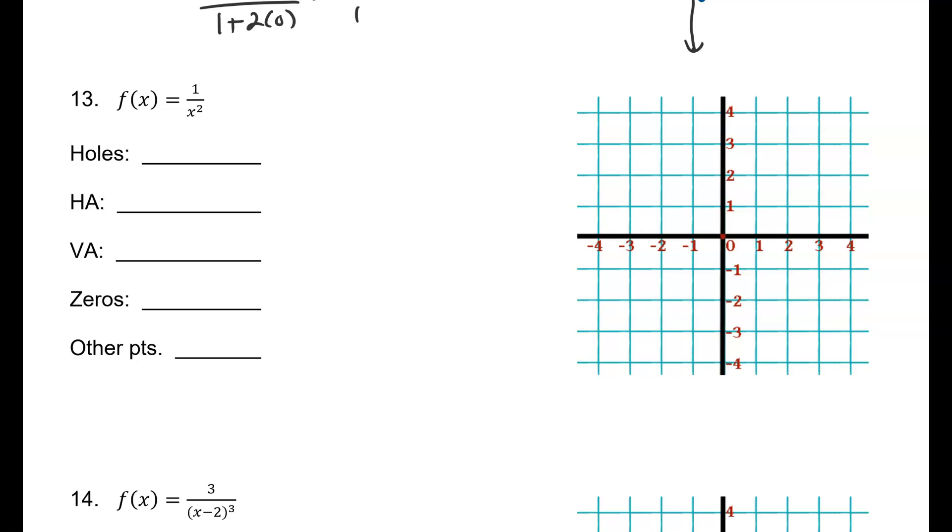All right, so let's start in order with what we're supposed to do. We're supposed to look for our vertical asymptote. Our vertical asymptote is where the denominator is equal to 0. So guys, let's do this. x squared is equal to 0.